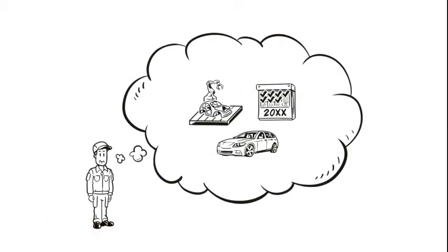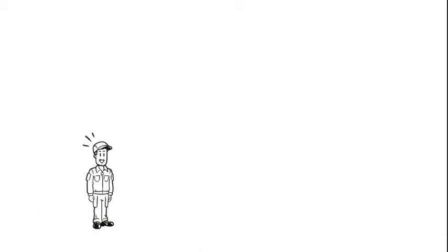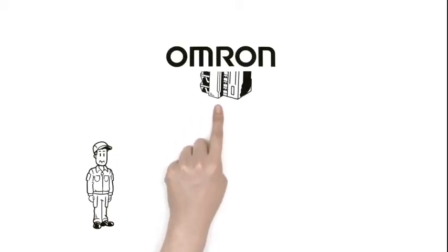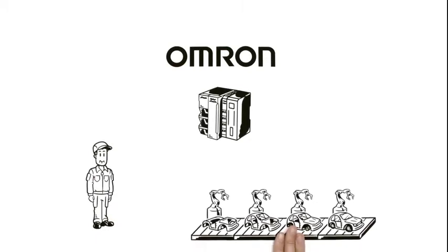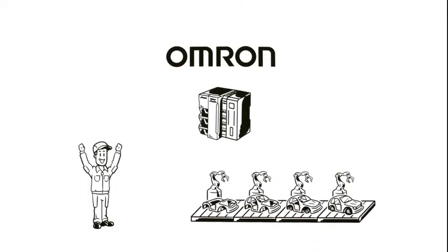Mike has no more doubts. He immediately places an order with OMRON. An NXSL Safety Network Controller is soon delivered, and Mike has his line set up and running in good time.